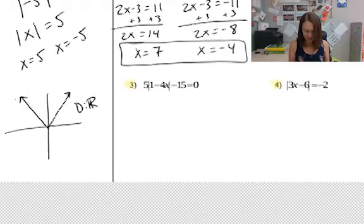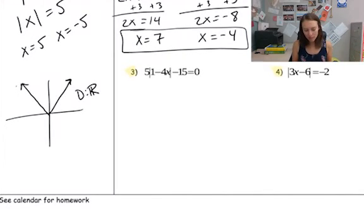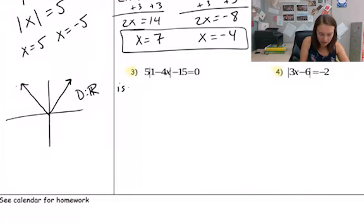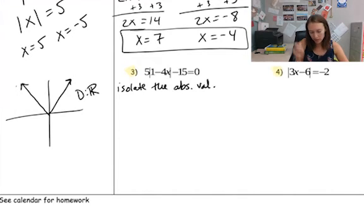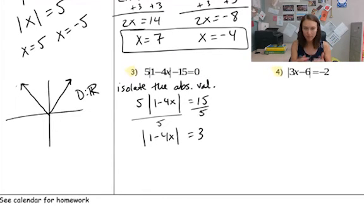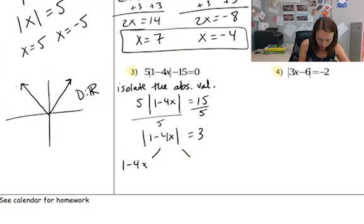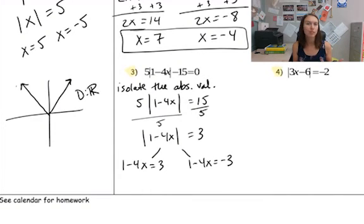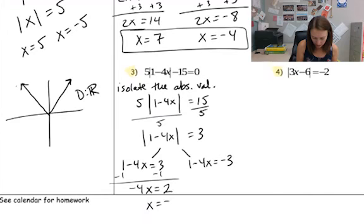All right, I'm going to skip number 2 — you can practice that on your own. Number 3 is a little more involved. One thing to note is that absolute values are different than parentheses — you cannot distribute into an absolute value. Instead, what we need to do is isolate the absolute value. So first I'm going to add 15 to both sides: 5 times the absolute value of (1 − 4x) equals 15. Then divide by 5: absolute value of (1 − 4x) equals 3. Now I can split into two equations: 1 − 4x = 3 and 1 − 4x = −3. Solving: negative 4x = 2, so x = −1/2, and negative 4x = −4, so x = 1. There are two solutions.